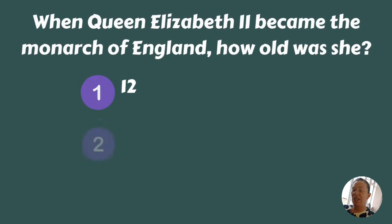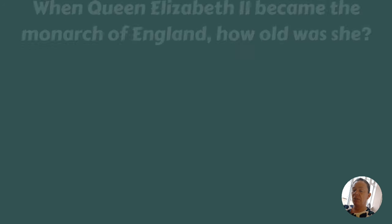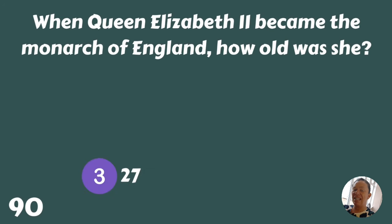When Queen Elizabeth II became the monarch of England, how old was she — twelve, twenty-one, or twenty-seven? Twenty-seven.